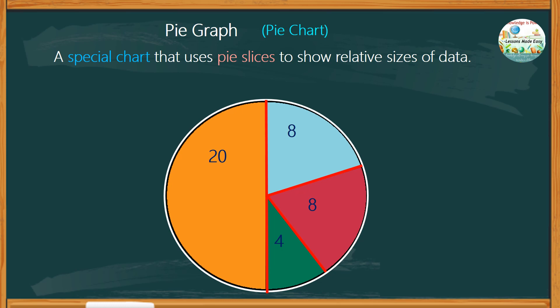Here is an example of a pie chart about the students' favorite types of movies such as comedy, science fiction, action, and drama. The whole circle is divided into a series of segments. Each segment represents a particular category.